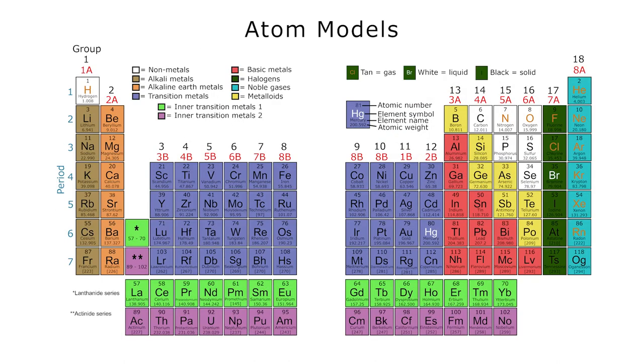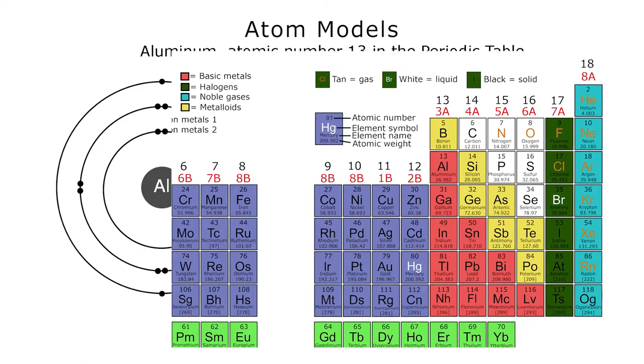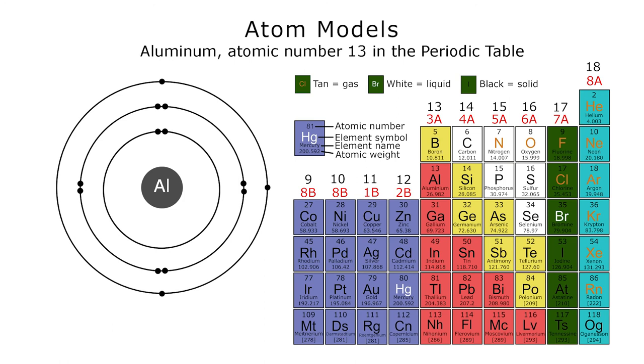Don't be afraid to look at that table, because next class, we're going to learn a lot more about it, and being familiar with its form and structure now will help you in the next class. Bohr models typically show the nucleus as a circle with the element symbol found in the periodic table, written in the center of the circle.